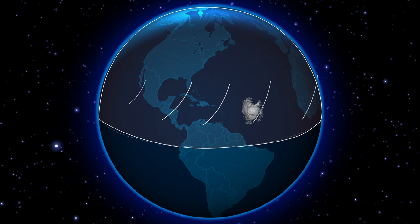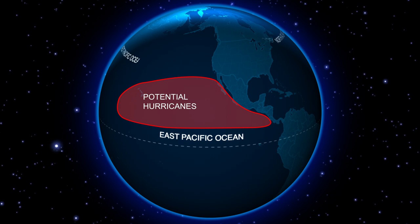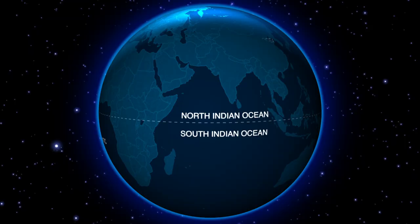There's the Atlantic hurricane season, Eastern Pacific hurricane season, Northwest Pacific typhoon season, the North Indian cyclone season. On either side of the equator they spin in different directions, but other than that there's not much difference. Then there are the Southwest and Southeast Indian Ocean cyclone seasons, and finally the Southwest Pacific cyclone season.